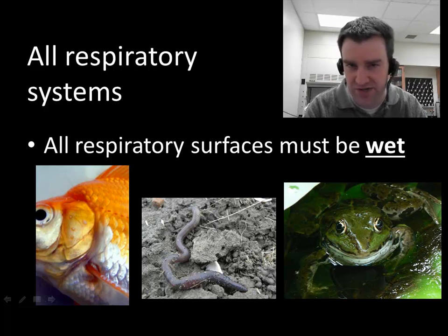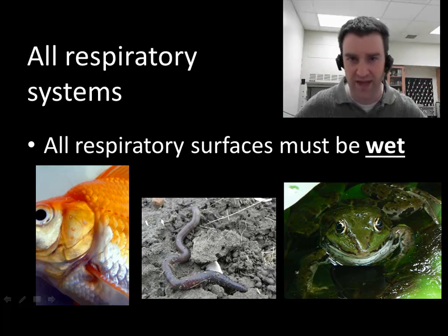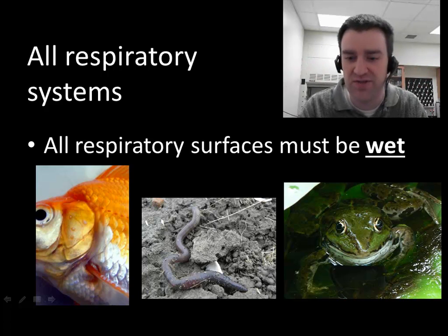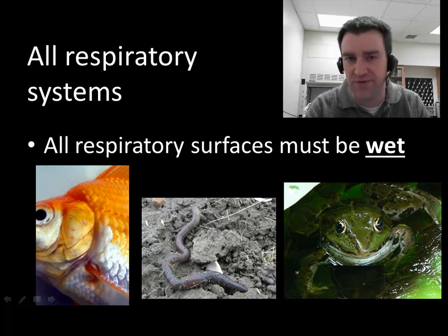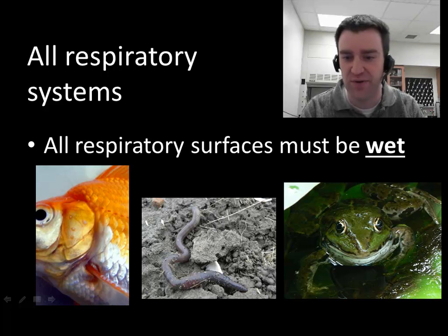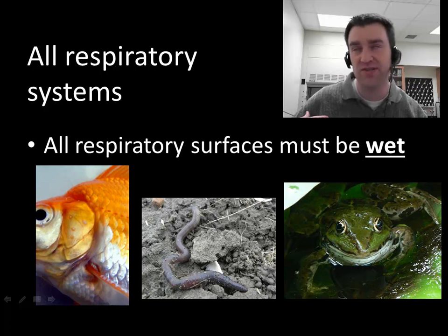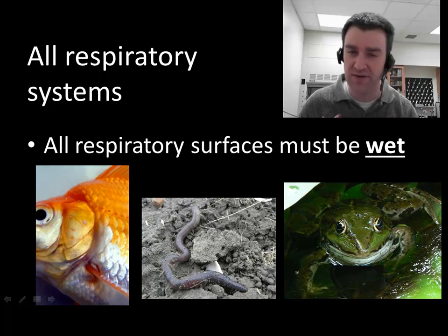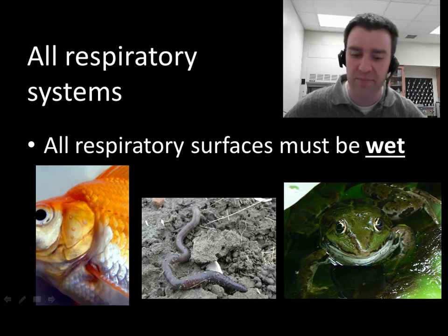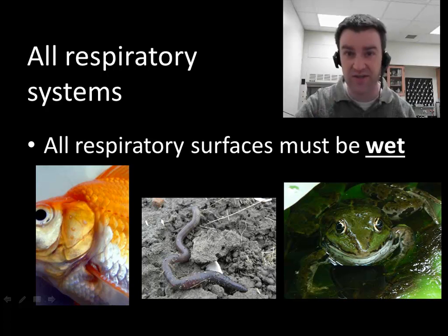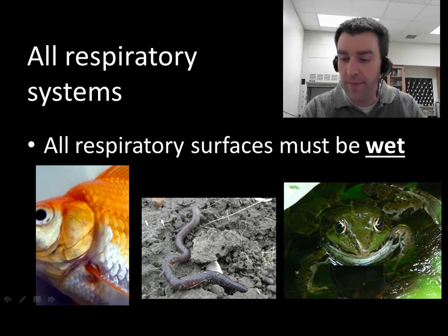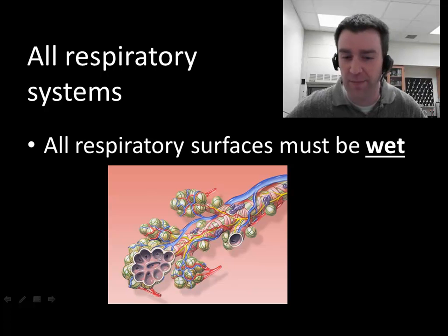What reptiles, mammals, and birds have done in our evolutionary history is not have wet skin — not secrete water to keep the entire epidermis moist. That enables us to live further on drier land, places where amphibians can't. We instead rely upon our lungs, and deep inside our lungs it's still wet in order to respire. Every time we breathe out we are still losing a bit of that water, but overall we're able to live in drier places.